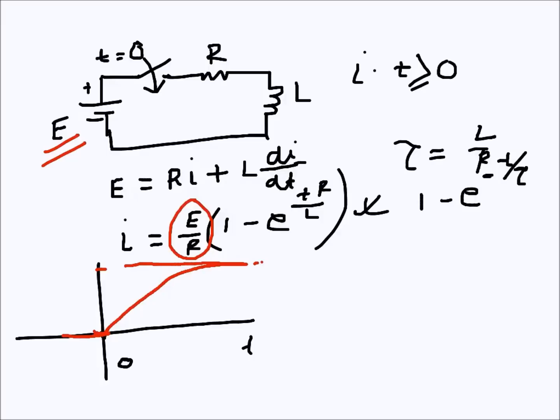We have seen that for a capacitor, the voltage rises this way and the current actually becomes zero after a while. So the capacitor becomes an open circuit when t is infinity.